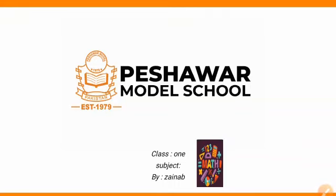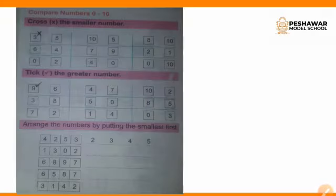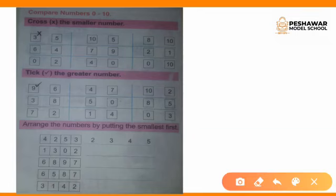I'm teaching Class 1 maths. Today our topic is comparing numbers 0 to 10. The first question is: cross the smaller number. We will see the blocks. We have different blocks and each question has two blocks. In one block we have the larger number and in the second block we have the smaller number. First we will see the numbers in the blocks, then we will cross the smaller number.